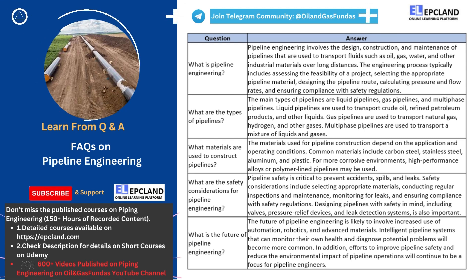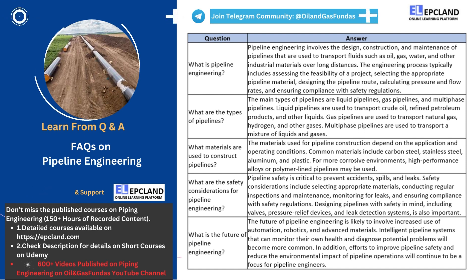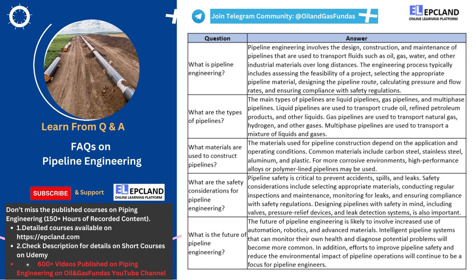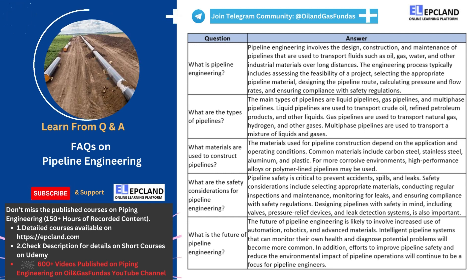Pipeline engineers are involved in the entire process of creating a pipeline, starting with the assessment of the feasibility of the project. They must select the appropriate materials for the pipeline construction, design the pipeline route, calculate pressure and flow rates, and ensure compliance with safety regulations. All of these steps are essential to ensure that the pipeline can transport the fluids safely and efficiently.